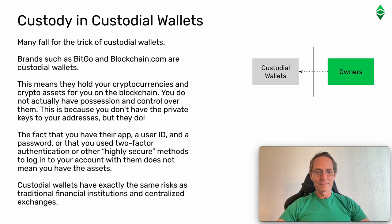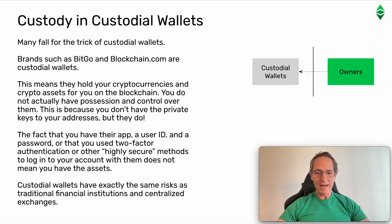Custody in custodial wallets. Many fall for the trick of custodial wallets. Brands such as BitGo and Blockchain.com are custodial wallets. This means they hold our cryptocurrencies and cryptoassets for you on the blockchain. You do not actually have possession and control over them. This is because you don't have the private keys to your addresses, but they do. The fact that you have their app, a user ID and password, or that you use two-factor authentication or other highly secure methods to log into your account with them does not mean you have the assets. Custodial wallets have exactly the same risks as traditional financial institutions and centralized exchanges.